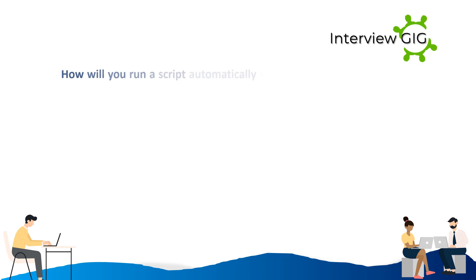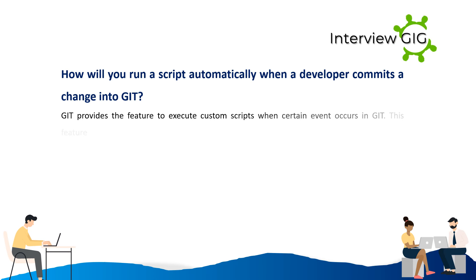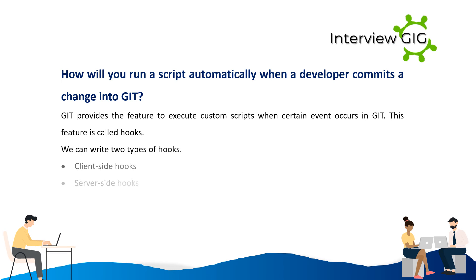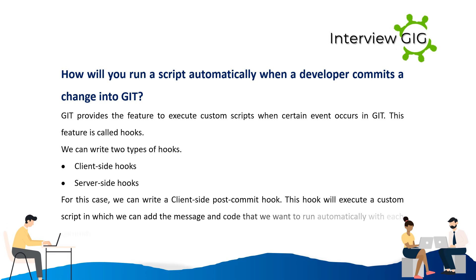To run a script automatically when a developer commits a change into Git, we use Git Hooks — a feature that executes custom scripts when certain events occur in Git. We can write two types: client-side Hooks and server-side Hooks. For this case, we write a client-side post-commit Hook, which executes a custom script containing the message and code we want to run automatically with each commit.